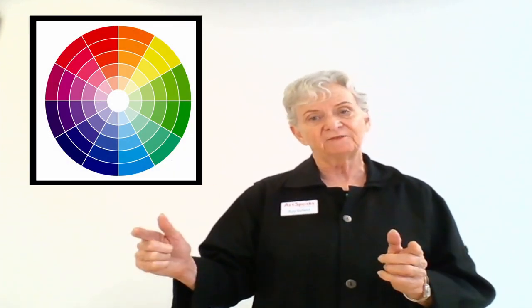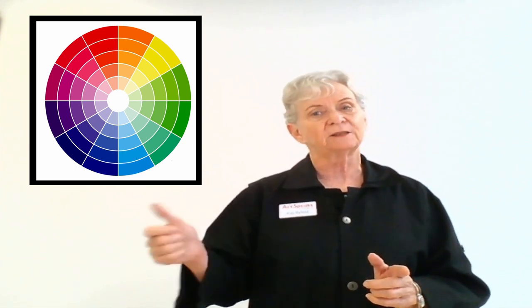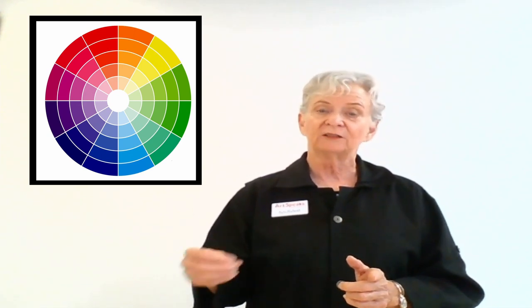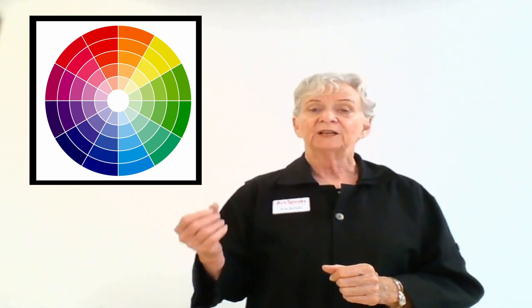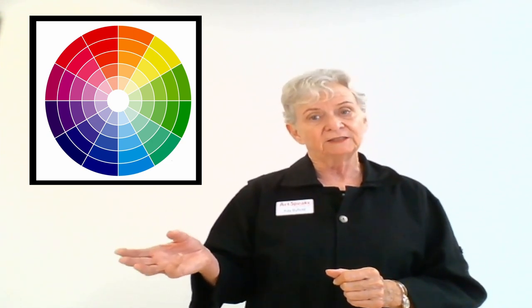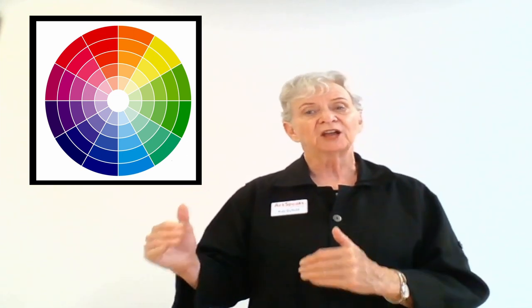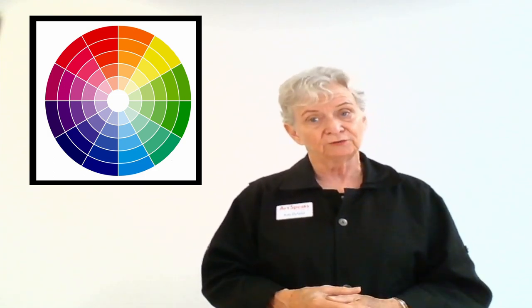The challenge is that every color has a different value range. So some colors have an extended value range where they go from very light to very dark as the blue, the purple, and the blue-violet do in the color wheel. And some colors like the yellow and that light bluish color and even the greens have a much shorter value range. And the challenge comes when we try to make darks using those hues.